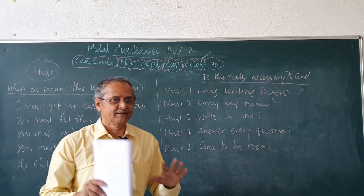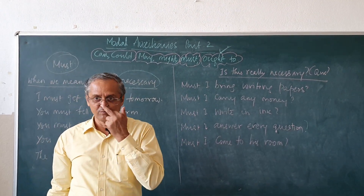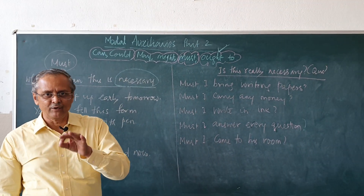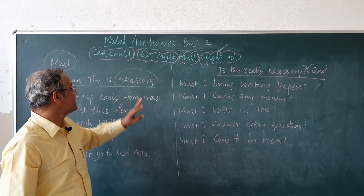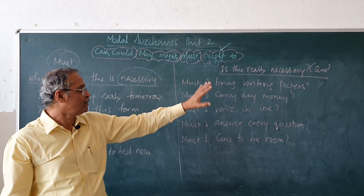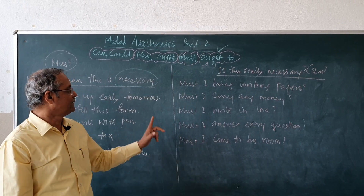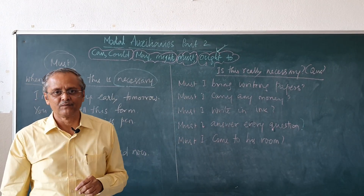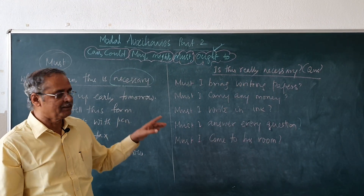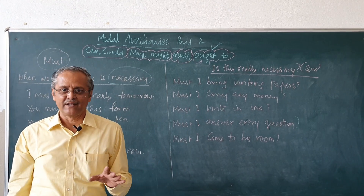In the grammar of modal auxiliaries, we should focus more on meaning and usage, and accurately use can, could, may, might, must, and ought to. You can go through more examples from standard grammar books. Most probably in the next video, we will take up reported speech. Thank you.